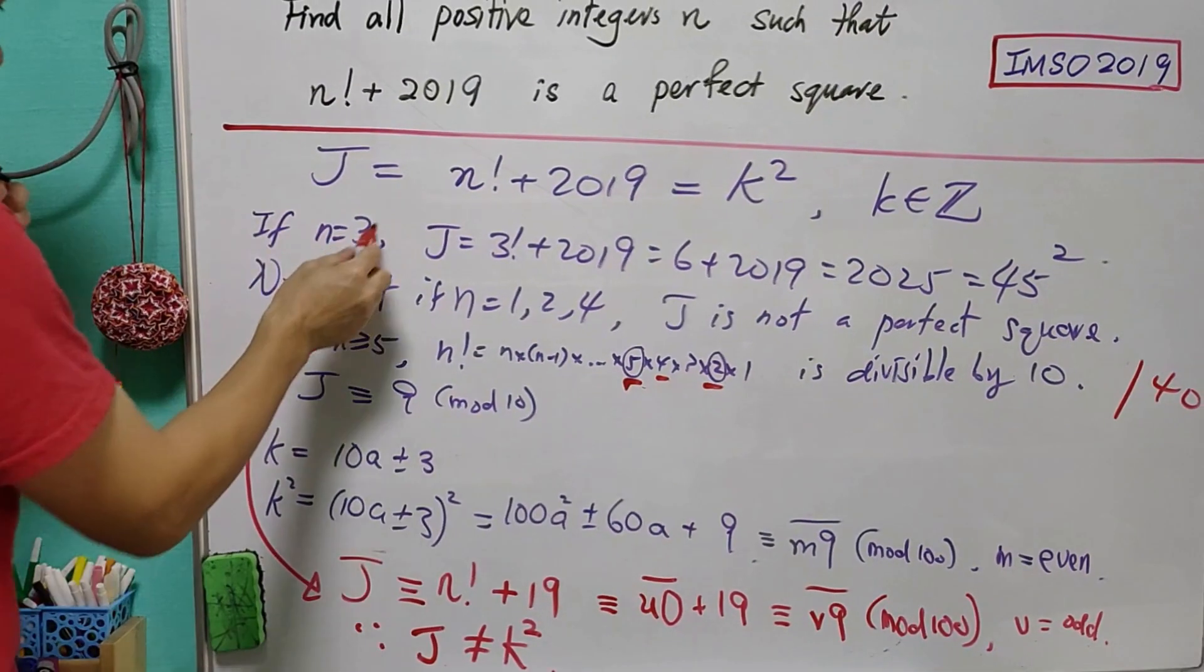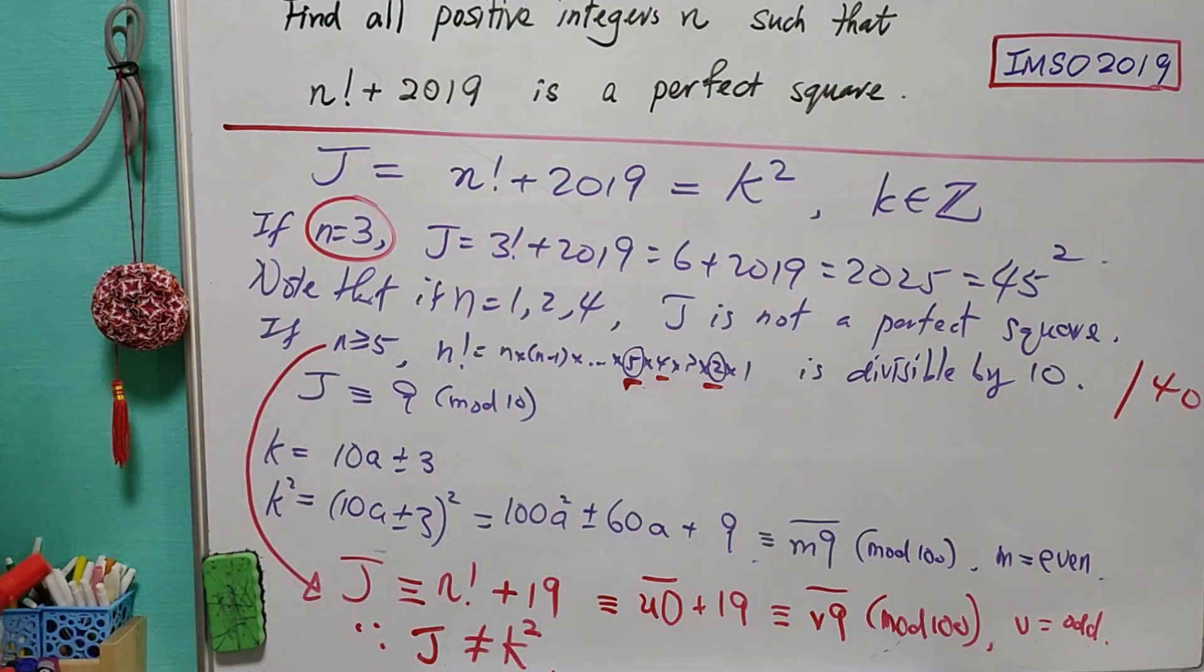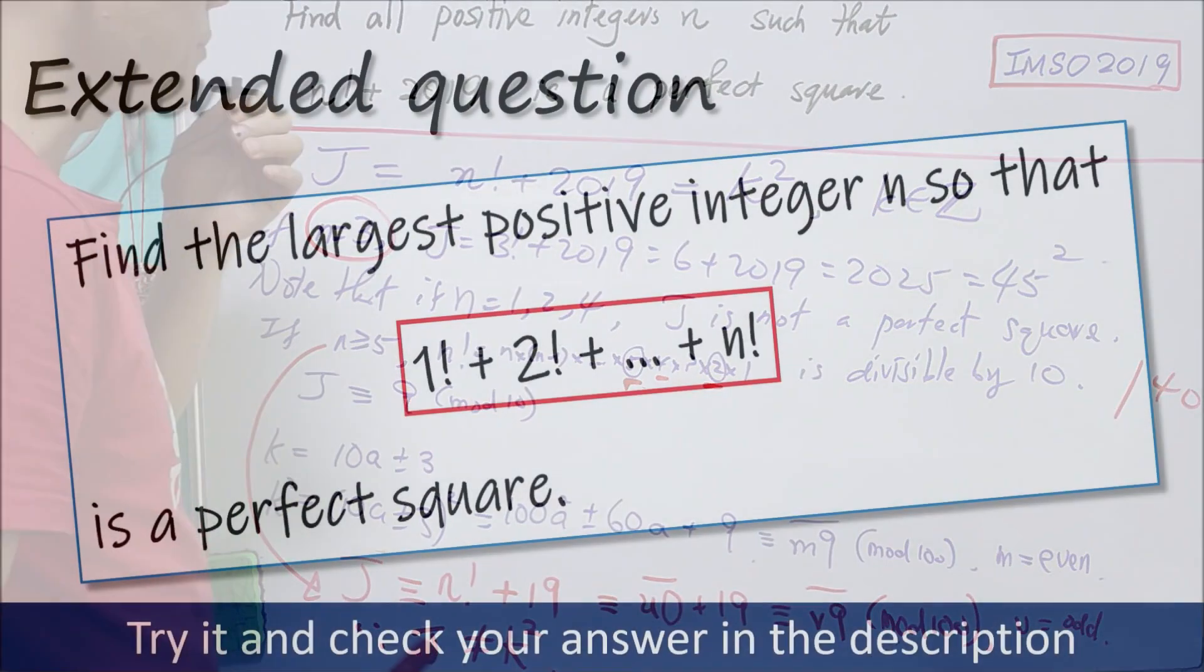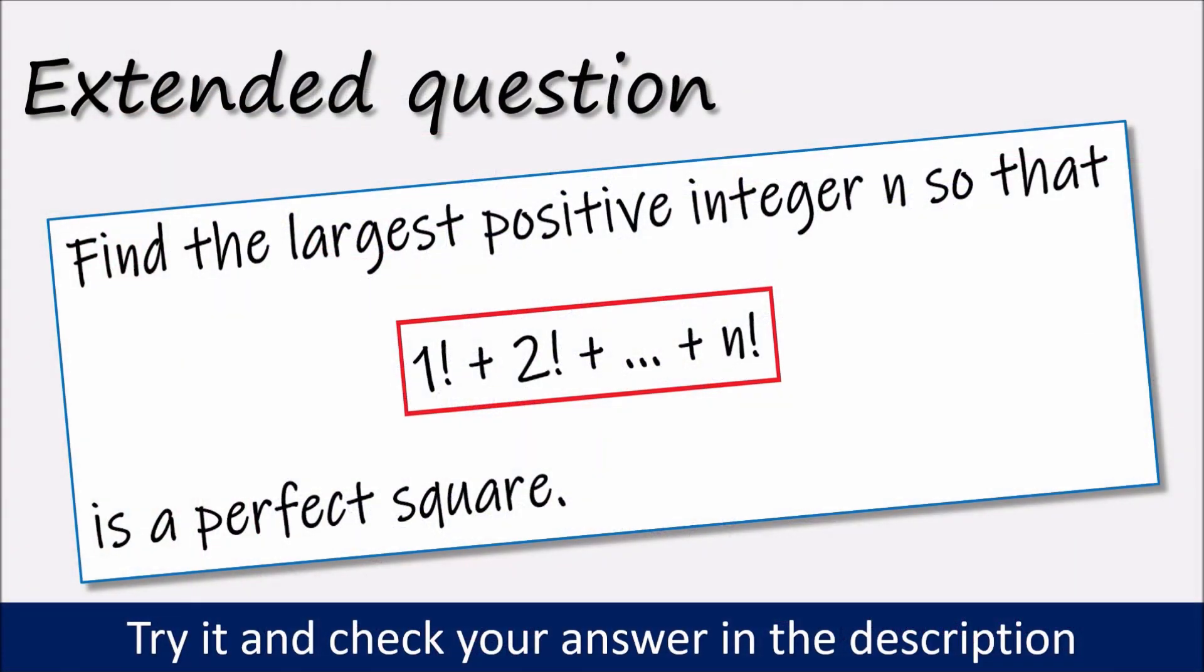And this means that n = 3 is the only answer for this question. As usual, I prepare one similar question. You may try it and check your answer in the description.